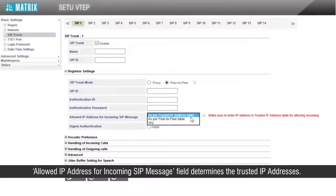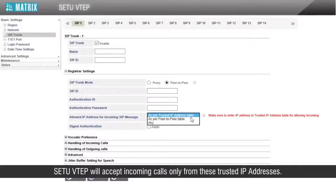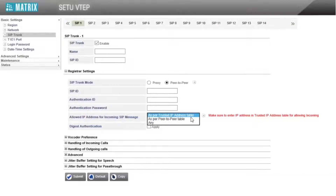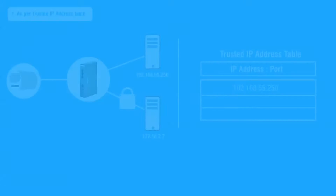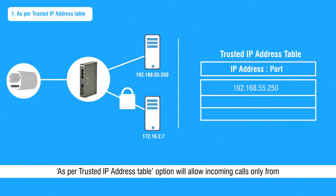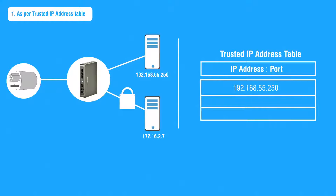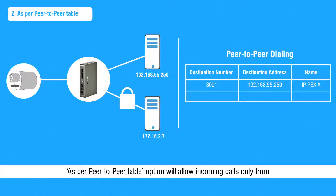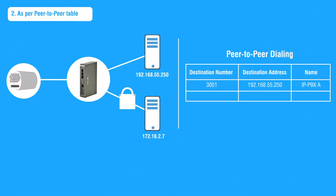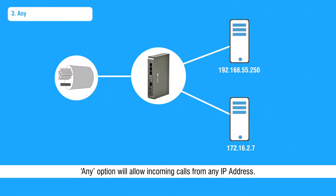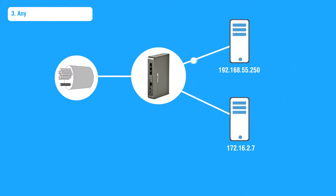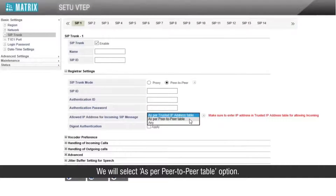The 'Allowed IP address for incoming SIP message' field determines the trusted IP addresses. Setu VTAP will accept incoming calls only from these trusted IP addresses. There are three options available: 'As per trusted IP address table' will allow incoming calls only from IP addresses mentioned in the trusted IP address table; 'As per peer-to-peer table' will allow incoming calls only from IP addresses in the peer-to-peer table; 'Any' will allow incoming calls from any IP address. We will select 'As per peer-to-peer table'.